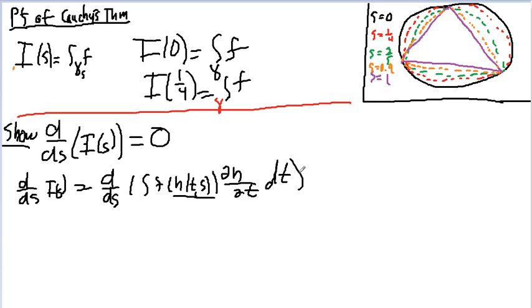And then Leibniz's rule says that I can move this to the inside, and it turns into partial with respect to S. And then you do a whole bunch of trickery involving recognizing that things are just product rules, and then you end up with 0 to 1 d/dt of F of H of T S. The H is like my gamma. dH/dS partials dt.